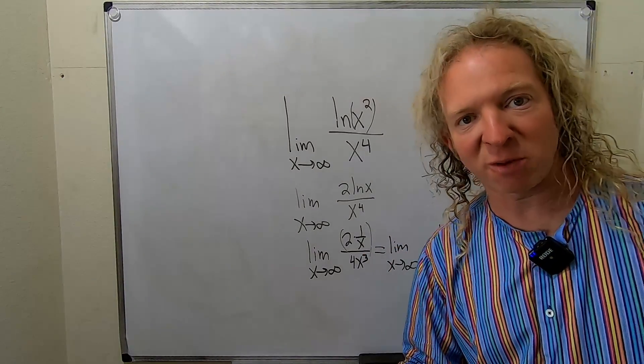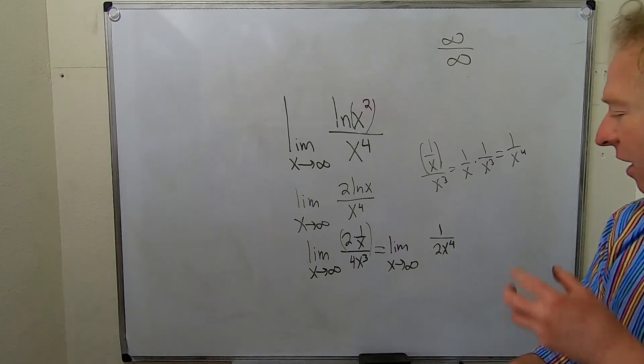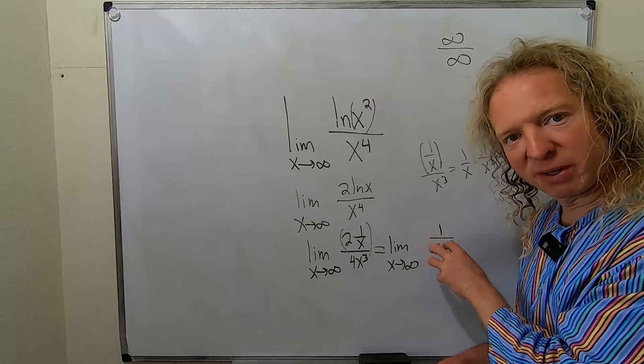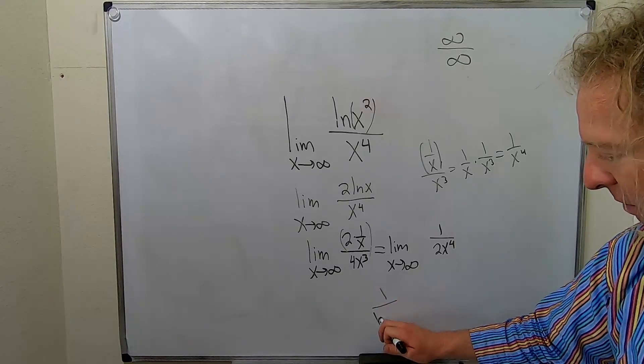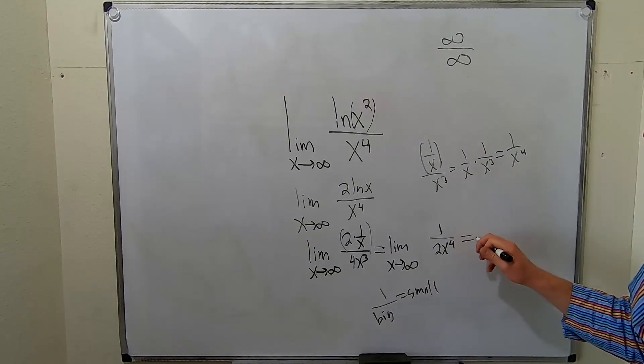At this point you can no longer use L'Hopital's because you only have an infinity on the bottom. So now you just have to say the bottom is getting really big. The top is always one. So you have one over something big, that's small. This is approaching zero.